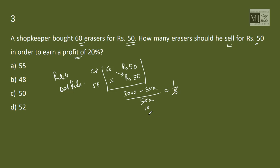That is 20%, 20 by 100 is 1 by 5. So this will give me 3000 minus 50x equals to 10x. 60x is 3000, x equals 3000 by 60, that is 50 units. So how many erasers were sold? 50 units were sold. Option C.